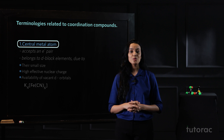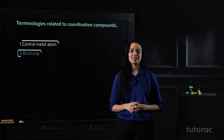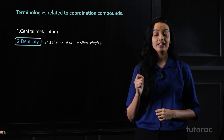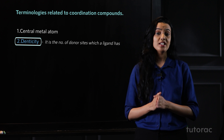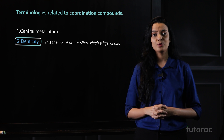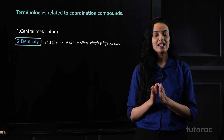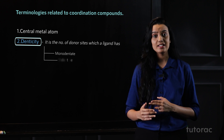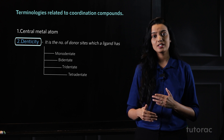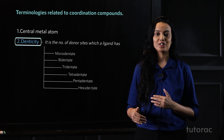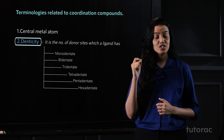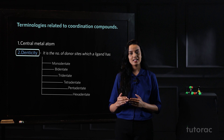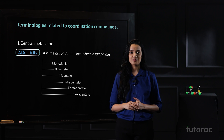The second term is denticity. Denticity is the number of donor sites which a ligand has. On the basis of the number of donor sites, ligands can be classified in many ways: monodentate, bidentate, tridentate, tetradentate, and so on. Also, based on the charge on them, we can call them anionic ligands, cationic ligands, or neutral ligands.